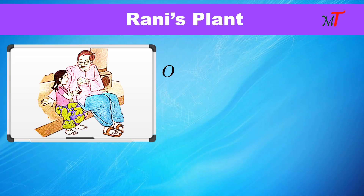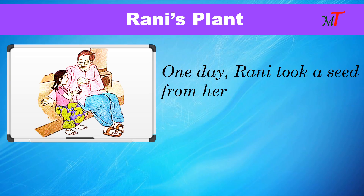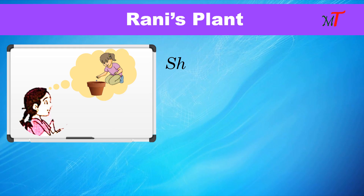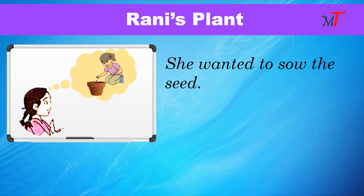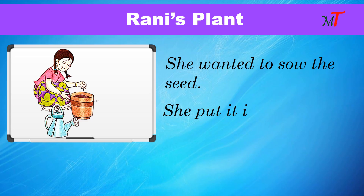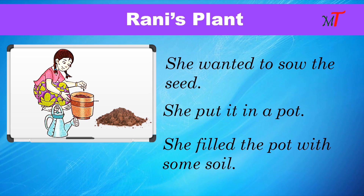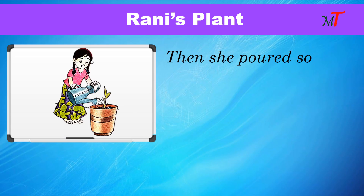Topic: Rani's Plant. One day, Rani took a seed from her grandfather Rajanna. She wanted to sow the seed. She put it in a pot. She filled the pot with some soil. Then she poured some water.